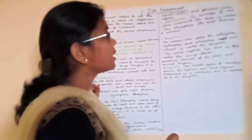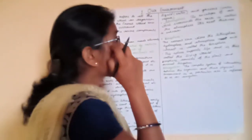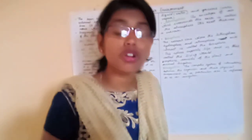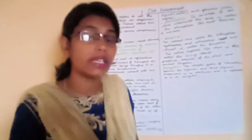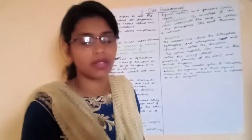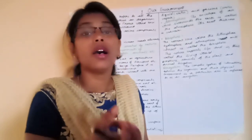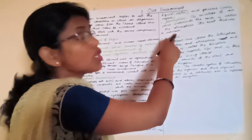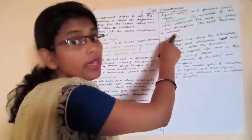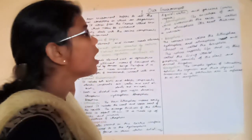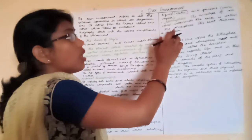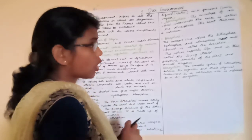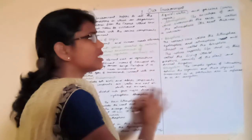Now let's come to the atmosphere. The envelope of air which surrounds the earth is called the atmosphere, and the atmosphere is a mixture of different gases. The most important life-giving gas found in the atmosphere is oxygen. All living beings take in oxygen and release carbon dioxide. The atmosphere also protects us from harmful radiation of the sun, that is ultraviolet rays, and is very important for all living beings.